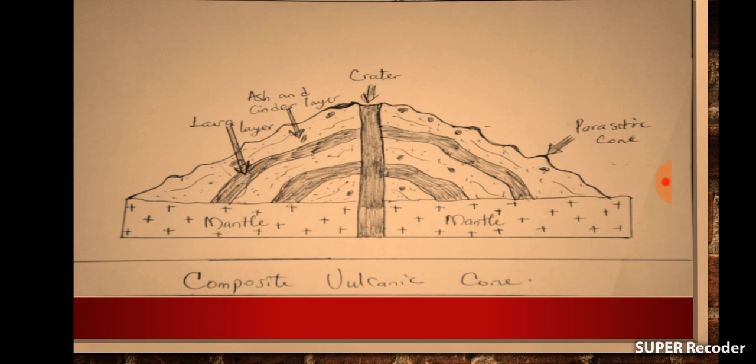As you see on the diagram, we have other features like parasitic cones, which are very small conelets which develop due to the emission of lava to sub-vents or mini-vents, unlike the eruption that comes out from the central vent. This is very common in Cameroon where we have Mount Cameroon, a composite volcanic cone characterized with both ash and cinder layers as well as lava layers.